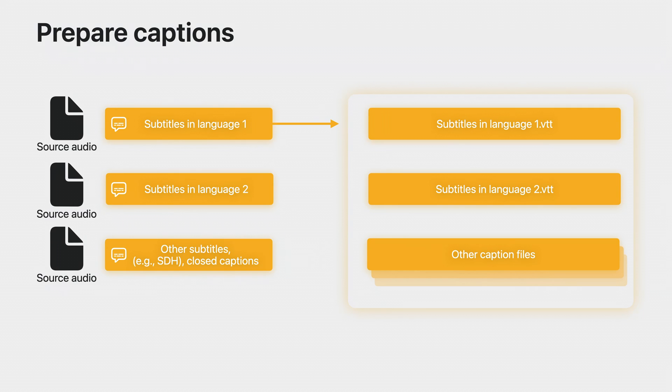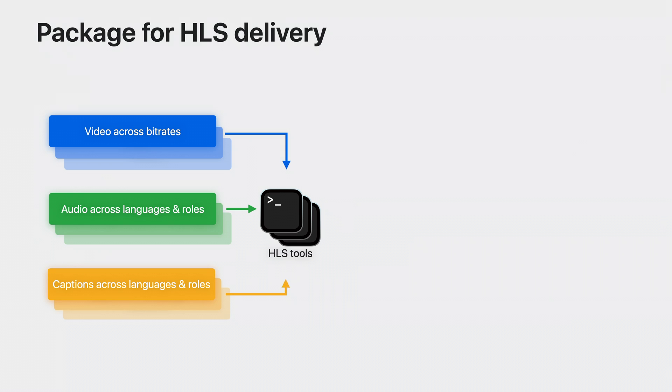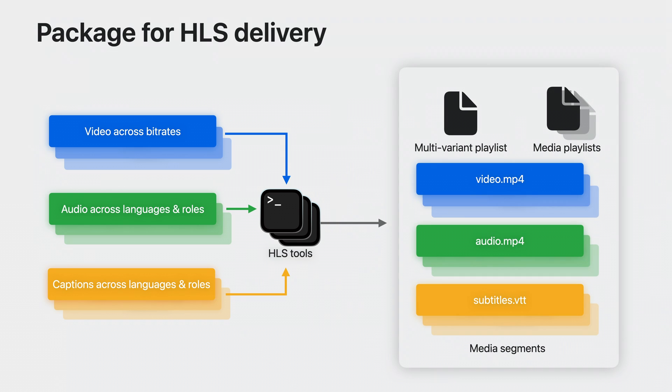With source video, audio, and captions in hand, next comes packaging. Packaging is a process that transforms the source media into various types of segments for reliable delivery. This can be done with Apple's HLS tools available at the HLS streaming page. Some content providers might use their own production tools, hardware, or workflows. Others might be vendors delivering those services and tools. The goal of packaging is to produce a set of media segments, the media playlists that drive their use, and a multivariant playlist that ties them all together.